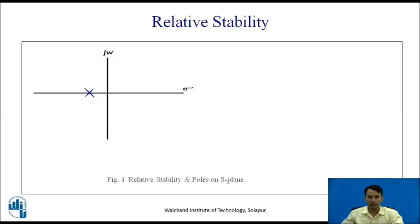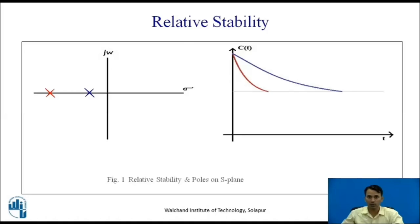For example, here we have a pole which is close to the imaginary axis, shown by blue color, and one more pole on the real part which is away from the imaginary axis, shown by red color. The response for the blue colored pole, which is near to the imaginary axis, takes more time to settle as compared to the red colored pole, which is away from the imaginary axis and settles easily and quickly.